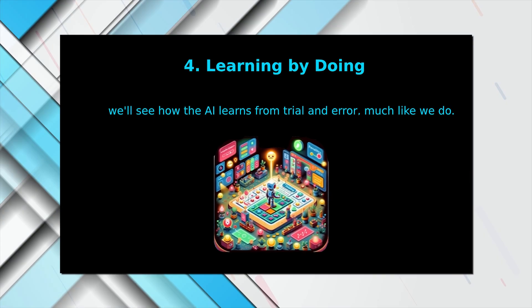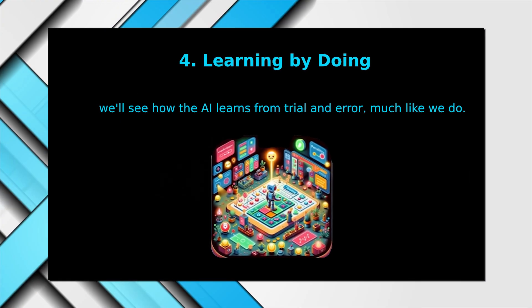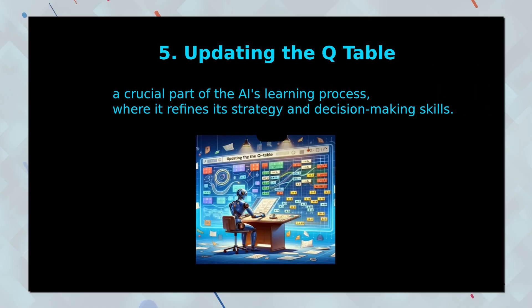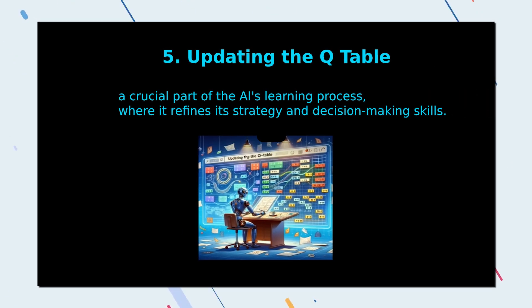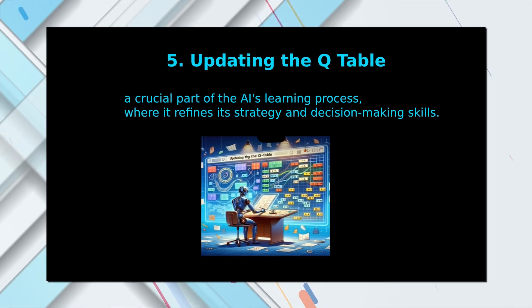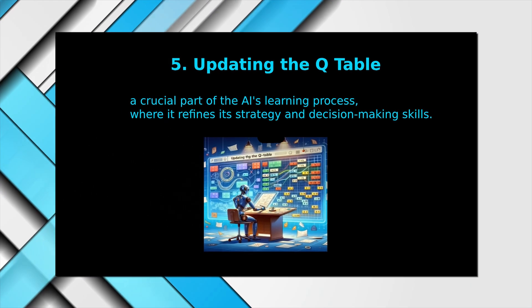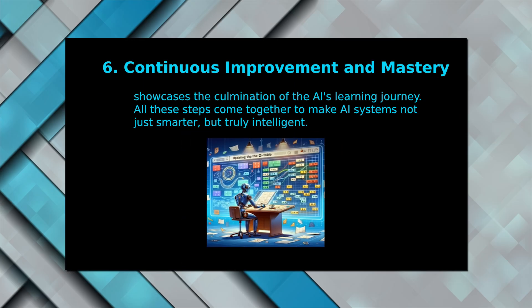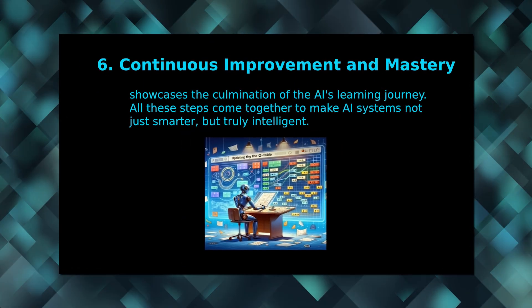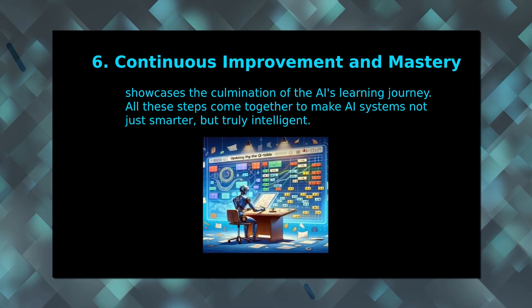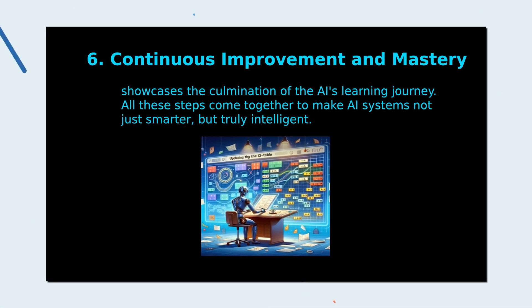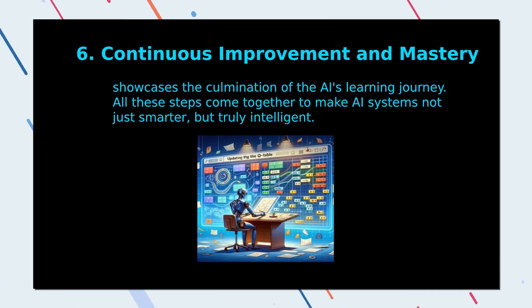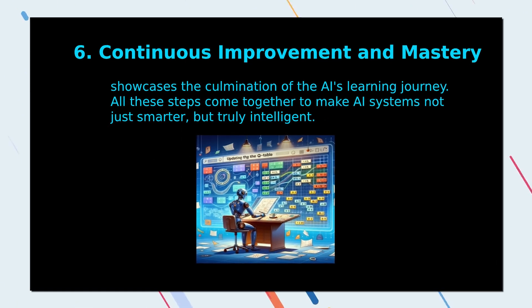In the fourth aspect, learning by doing, we see how the AI learns from trial and error, much like we do. Updating the Q table is the fifth step — a crucial part of the AI's learning process where it refines its strategy and decision-making skills. And finally, the sixth step, continuous improvement and mastery, showcases the culmination of the AI's learning journey. All these steps come together to make AI systems not just smarter, but truly intelligent.